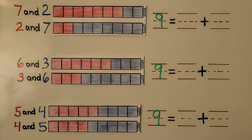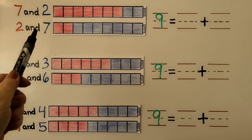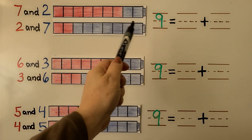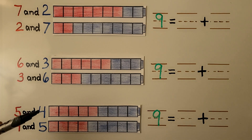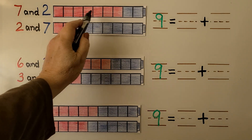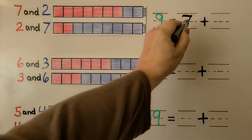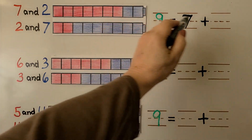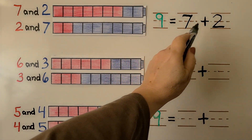We just saw that the number pair eight and one make nine when added together. We can show nine as seven and two. The order doesn't matter, so we could write two and seven. We have seven red and two blue, or we could do two red and seven blue. We count the number of red: one, two, three, four, five, six, seven. We write that number. We count the number of blue: one, two. Nine is equal to seven plus two.